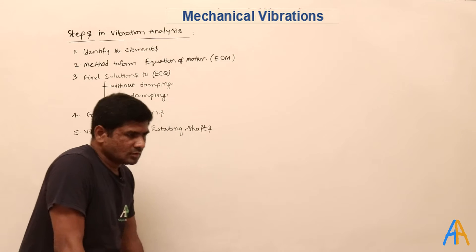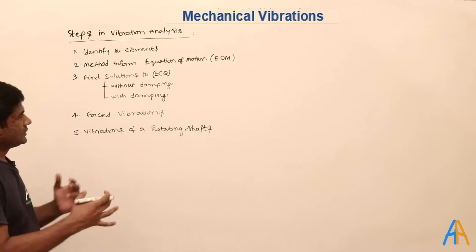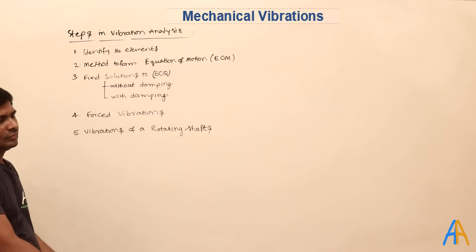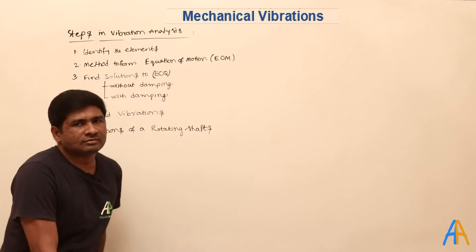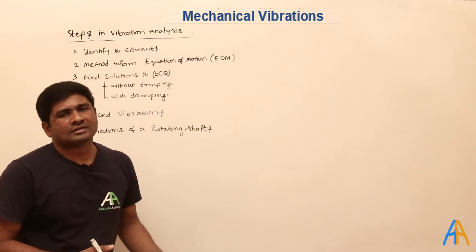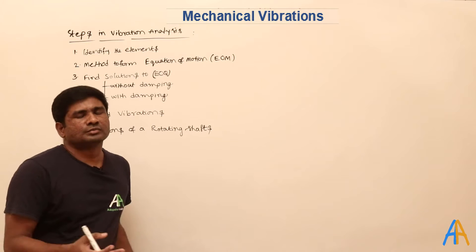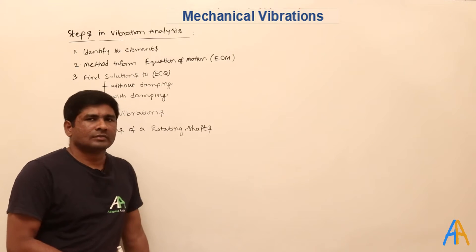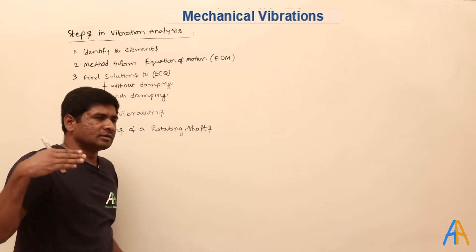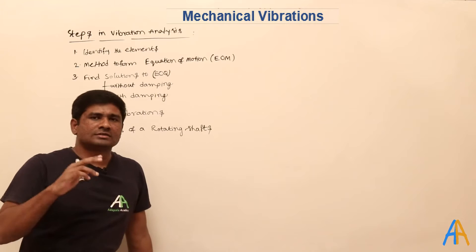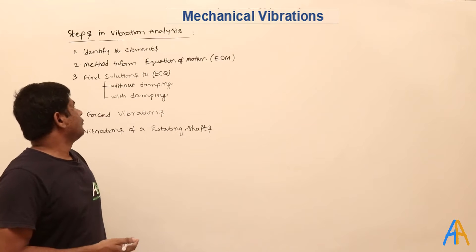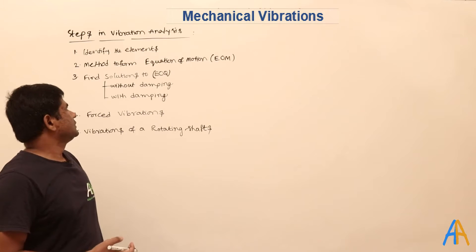Now we will enter into the real subject — the different steps we will follow in vibration analysis. First and foremost, you need to identify the elements in the vibrating system. The elements are mass, spring, and the damping dashpot. We will study how to identify whether the system is translating or rotating, and what to consider in each case.